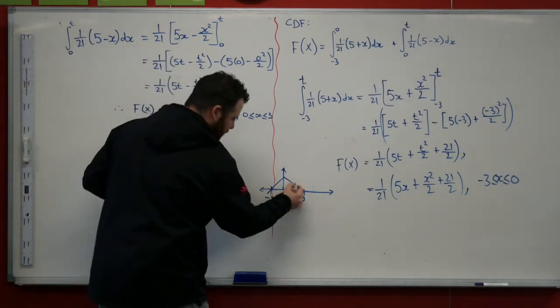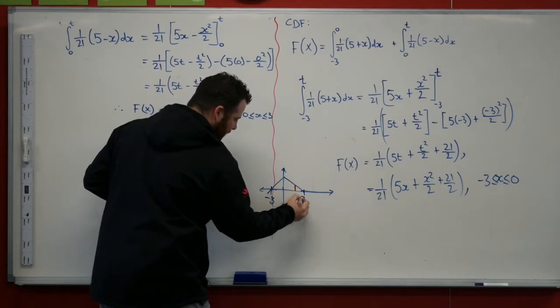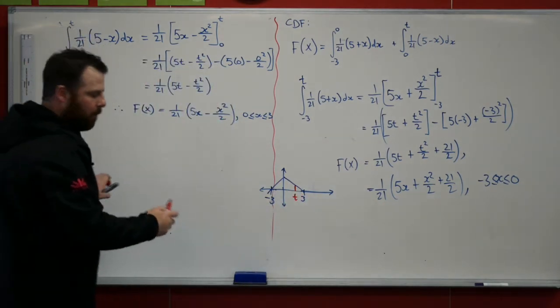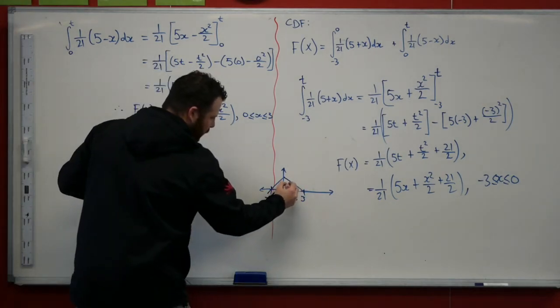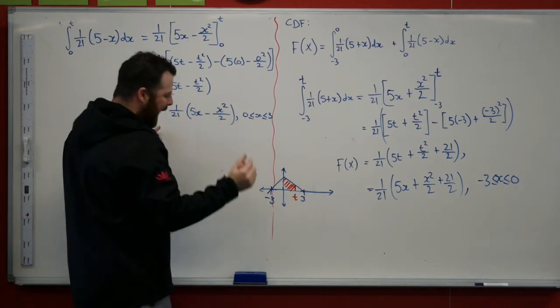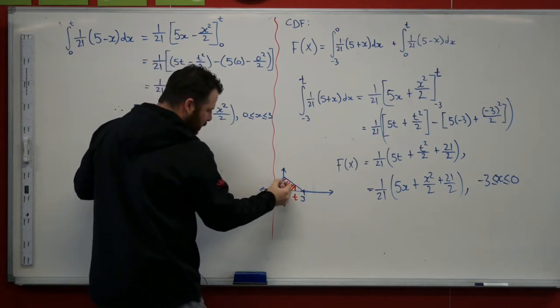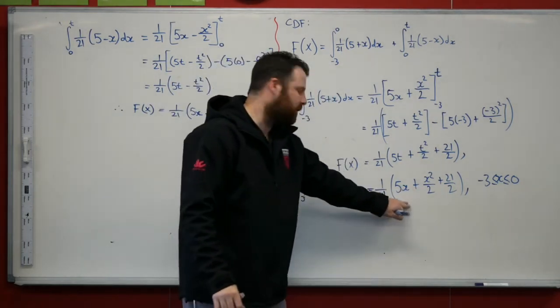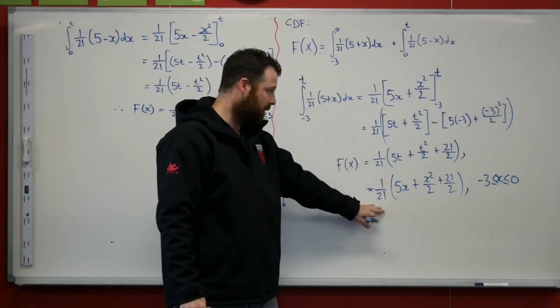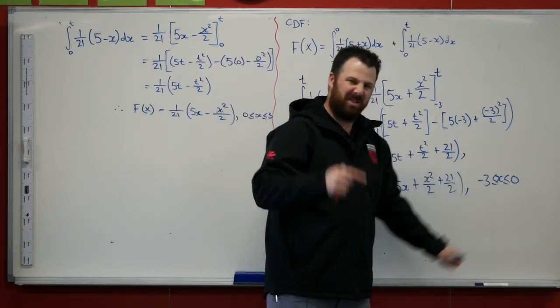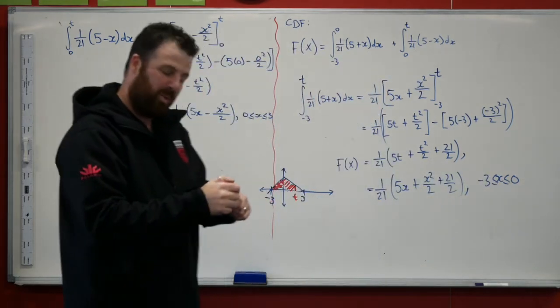And there's 5 minus x between 0 and 3. If I had some point there, if I was trying to find all the area below that point, I need to put t in here, but I also need to add to it everything from here. So I need to evaluate. I need to know what is the value of this one at its uppermost boundary. I need to know when I put 0 in that changeover point, what is it?